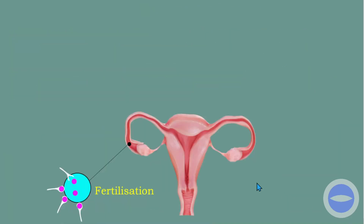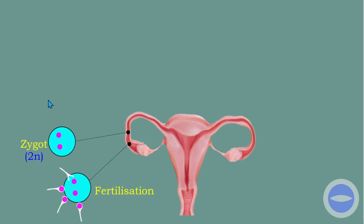Next we go to the formation of the blastocyst. After fertilization, the zygote — a fertilized egg — will undergo mitosis to multiply itself many times. Here we have the zygote, which contains a nucleus from the male and a nucleus from the female. This zygote is diploid, containing 46 chromosomes, and it will undergo mitosis.